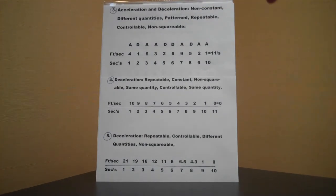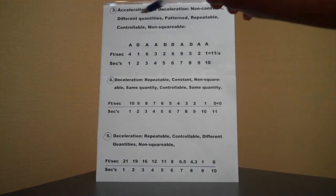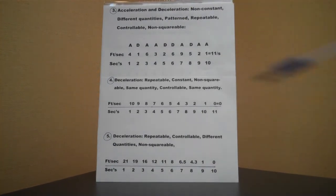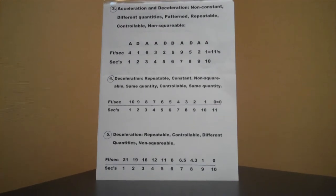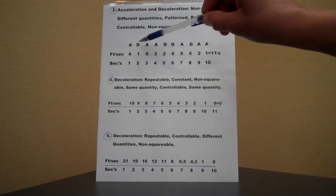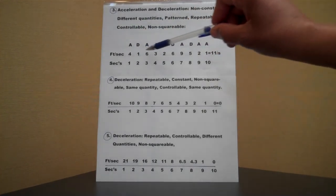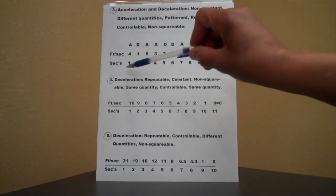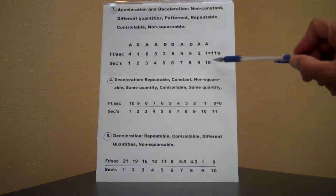Now, number three, acceleration and deceleration, together, is non-constant, different quantities, patterned, repeatable, controllable, non-squarable. As you can see, A stands for acceleration, D stands for deceleration. You have feet per second, as before, and you have the seconds right here, all the way up to ten seconds.